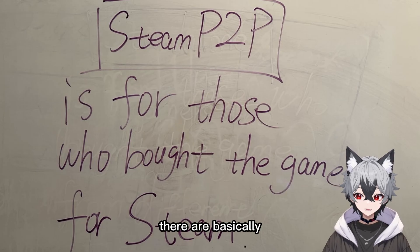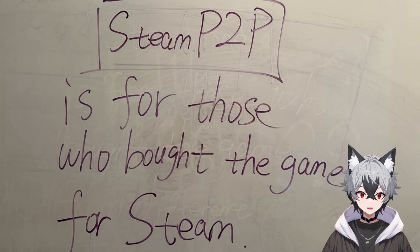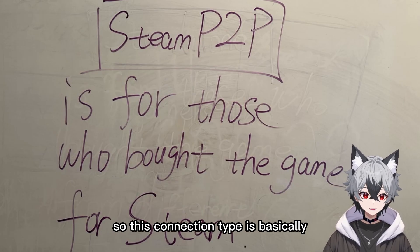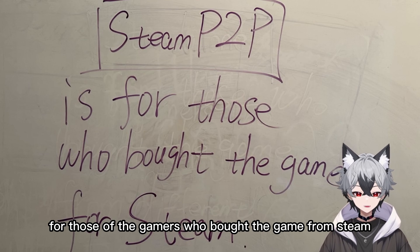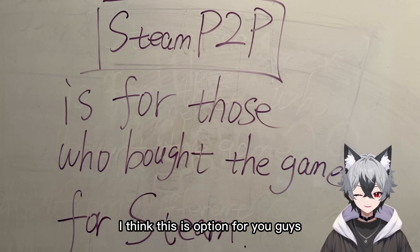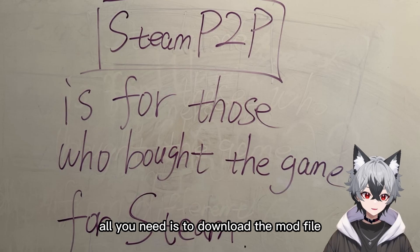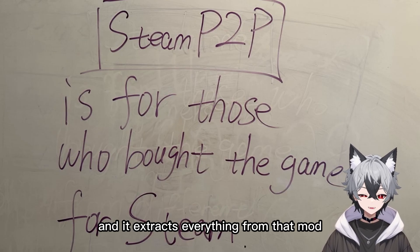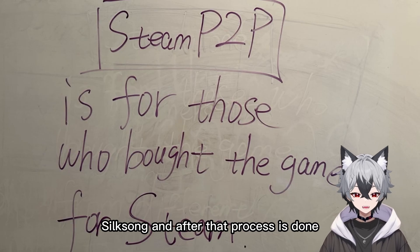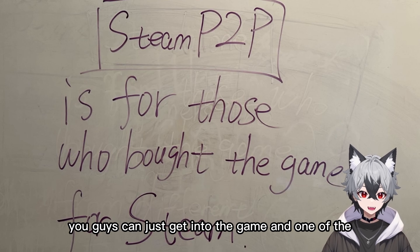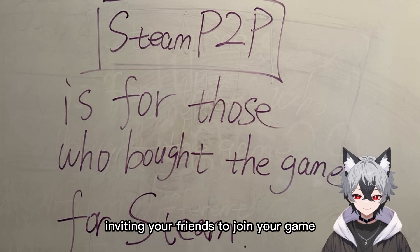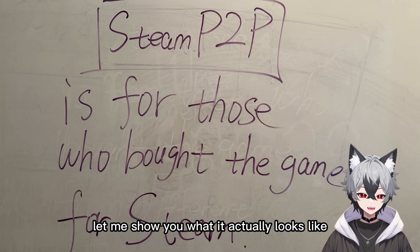There are basically two different types of connection when it comes to setting up the mod. One of the connection types is Steam P2P. This connection type is for those gamers who bought the game from Steam. So let's say you and your friends all own this game on Steam — this is the option for you guys. It's very easy to set up. All you need is to download the mod file and extract everything from that mod zip file and paste them into the root directory of the game. After that, you can get into the game, host it, and start inviting your friends to join.